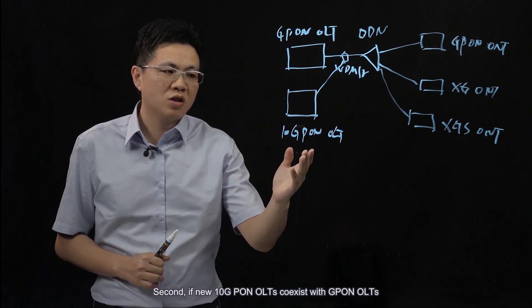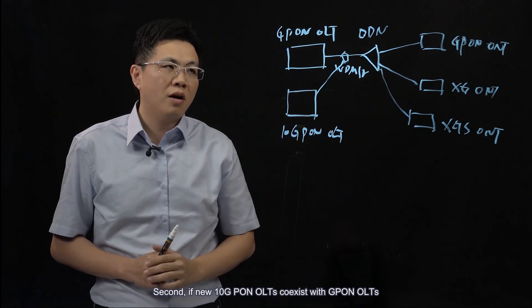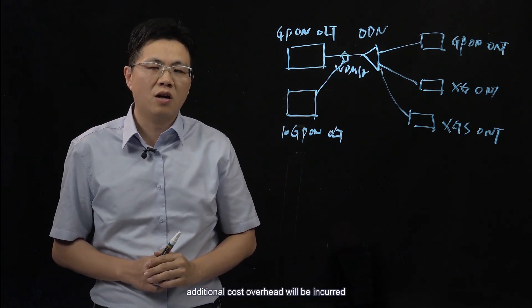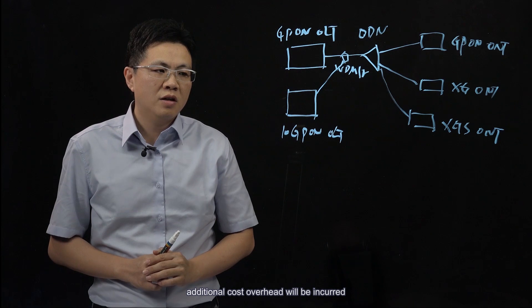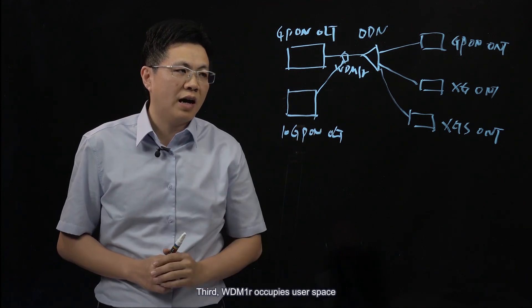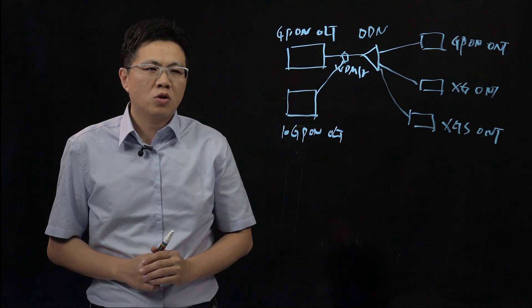Second, if new 10G PON OLTs co-exist with GPON OLTs, additional cost overhead will be incurred. Third, WDM-1R occupies user space.